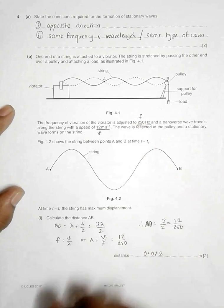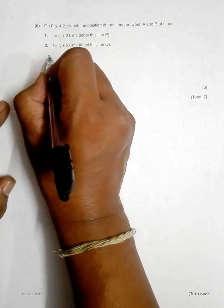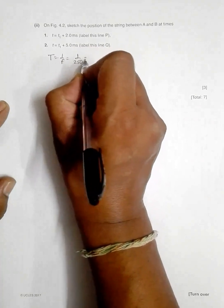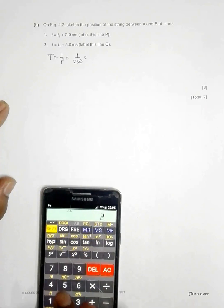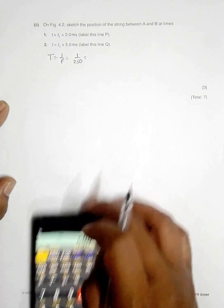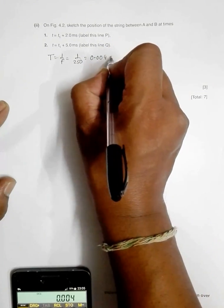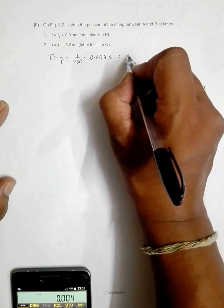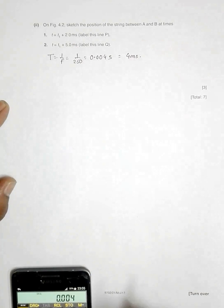Since the frequency is 250 Hz, the time period T = 1/f = 1/250 = 0.004 seconds, which equals 4 milliseconds.